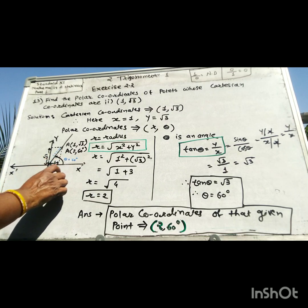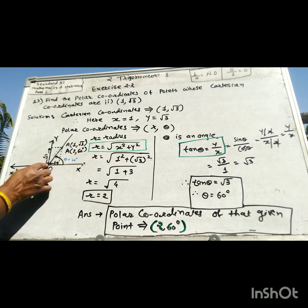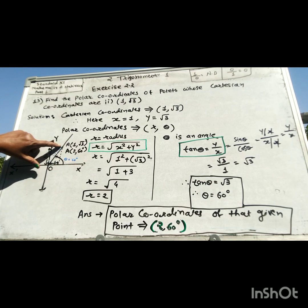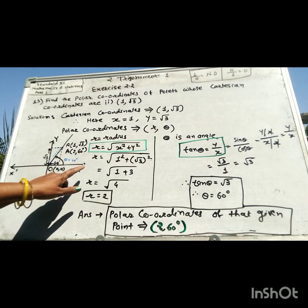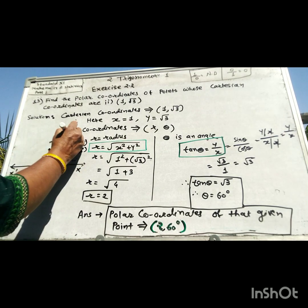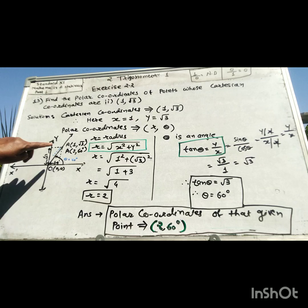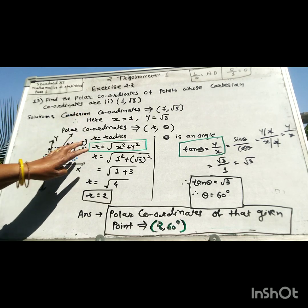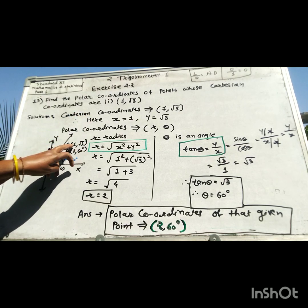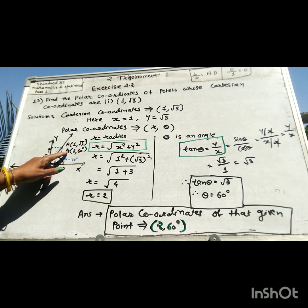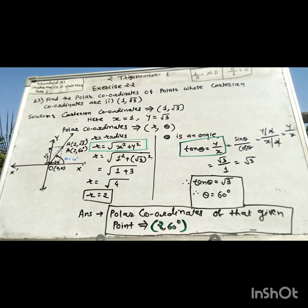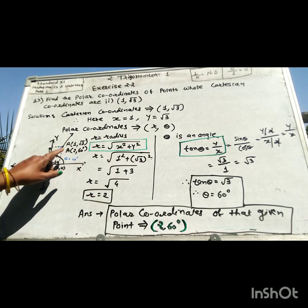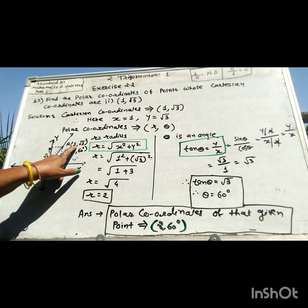The polar coordinates consist of the angle and the distance between the point and the origin. Here O is the origin with coordinates 0 and 0, and this point A has Cartesian coordinates 1 and root 3.